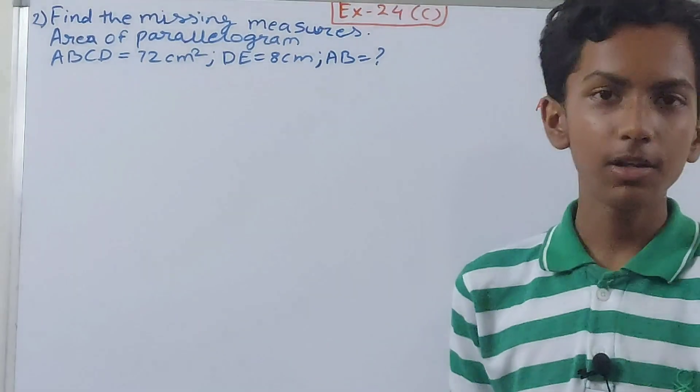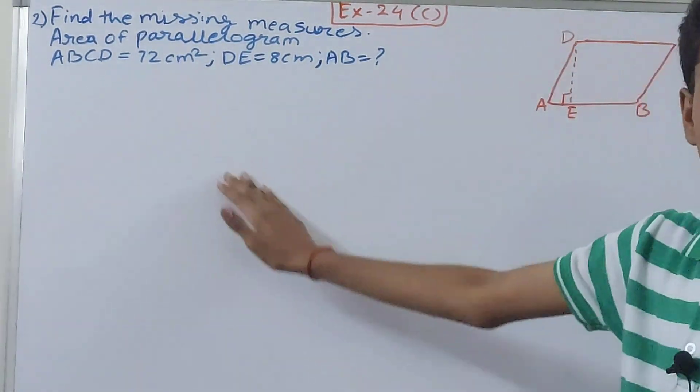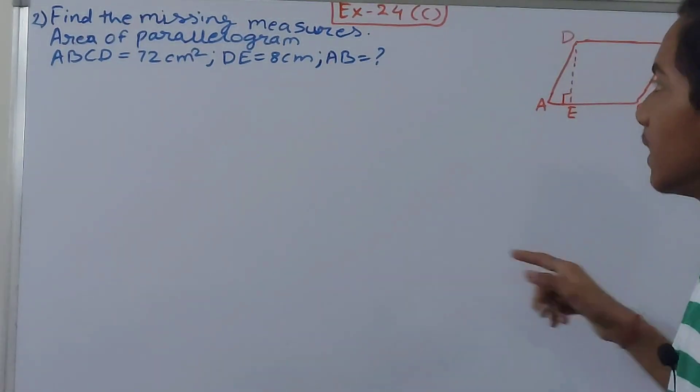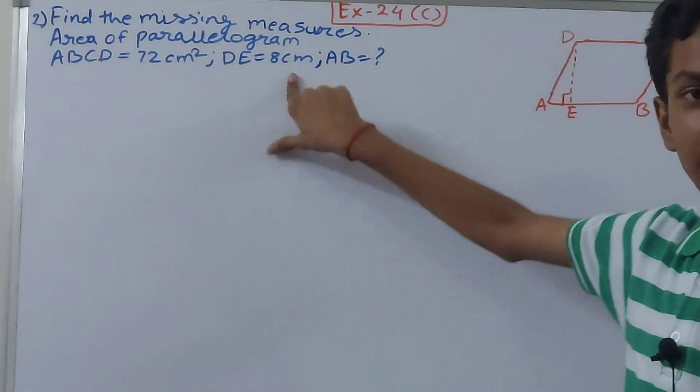This is find the missing measures. First, you can see area of the parallelogram is given to us, that is ABCD equals to 72 square centimeters. And then here you can see DE is given as 8 centimeters.